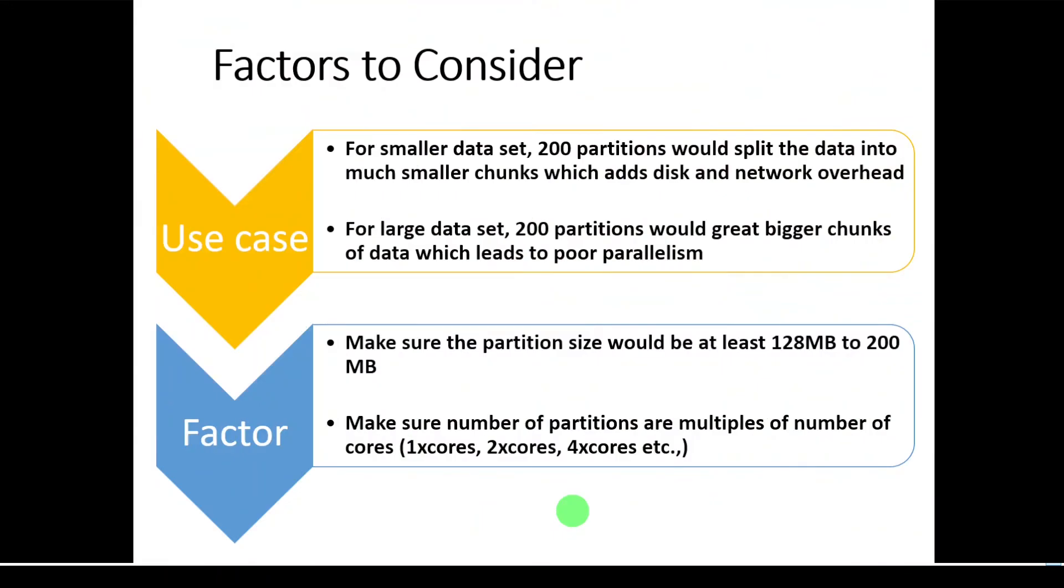What are the factors to consider while choosing the shuffling parameter? As I told earlier, it is depending on the use case. Let's say we have a smaller data set in our application, let's say it's one gigabyte, and 200 partitions for one gigabyte would be huge number, which means each partition would be very small in size. So this is going to add overhead to our disk and network operations.